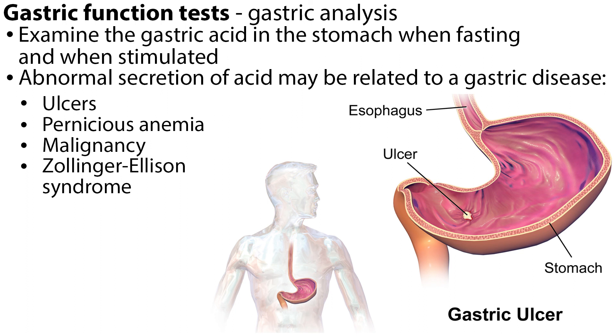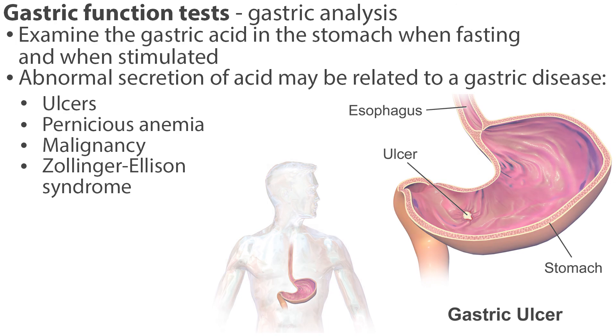Gastric function tests, such as gastric analysis, examine the gastric acid in the stomach when fasting and when stimulated. Abnormal secretion of acid may be related to a gastric disease, such as ulcers, pernicious anemia, malignancy, or Zollinger-Ellison syndrome. This concludes our tutorial on GI diagnostic procedures. I hope this overview of lab tests, imaging, and endoscopic procedures will help you in your study for the NCLEX.